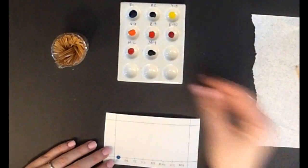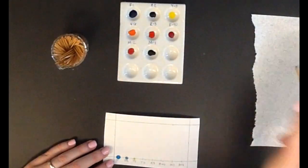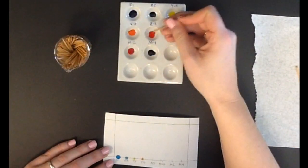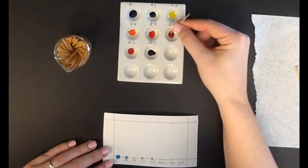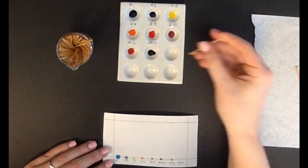Using a different toothpick for each dye, spot each dye into the corresponding spot on your chromatography paper. Once you are finished spotting, roll your paper and staple the edges together. Make sure you do not overlap the edges.